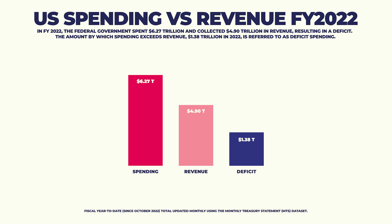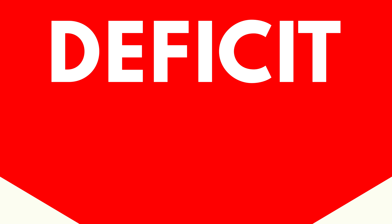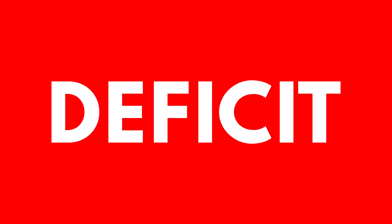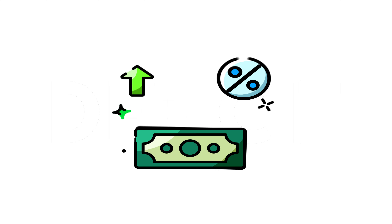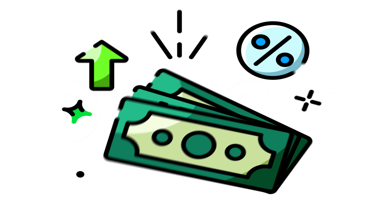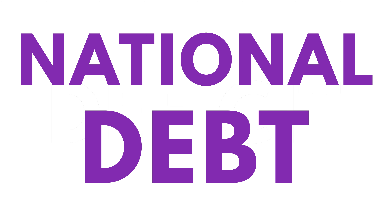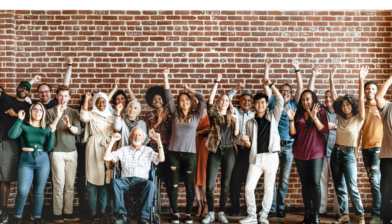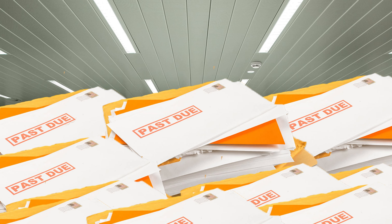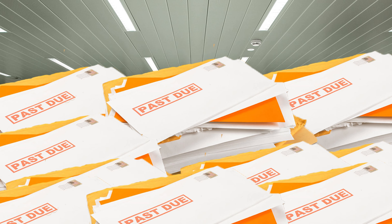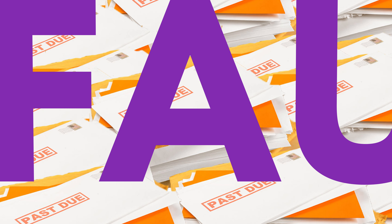Today the U.S. regularly spends more than it collects in revenue. This yearly shortfall is called the deficit. To cover that shortfall, the government borrows money by issuing government securities or bonds — investors lend that cash with the expectation the government will pay them back with interest. Together those loans comprise the national debt. Our debt is now held mostly by the public, although a large portion is owned by foreign governments, the Federal Reserve, U.S. banks, and state and local governments, among others. If the government hits the debt ceiling and fails to pay bondholders, we could go into what's known as default.